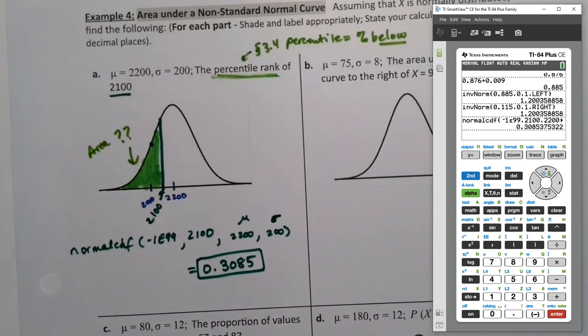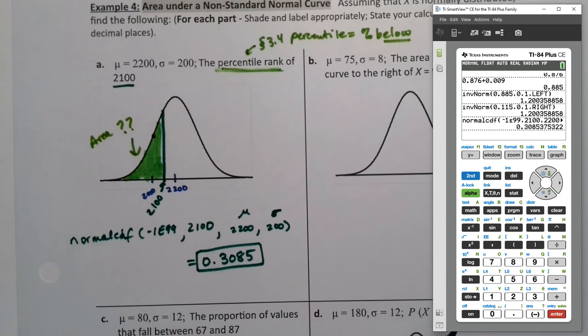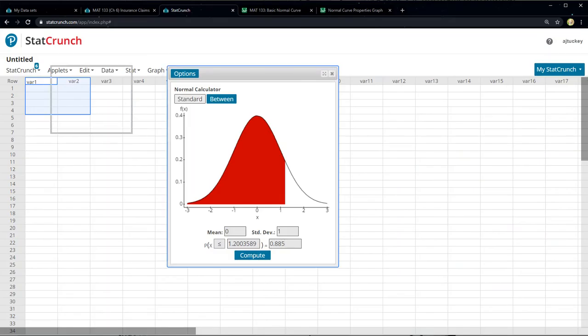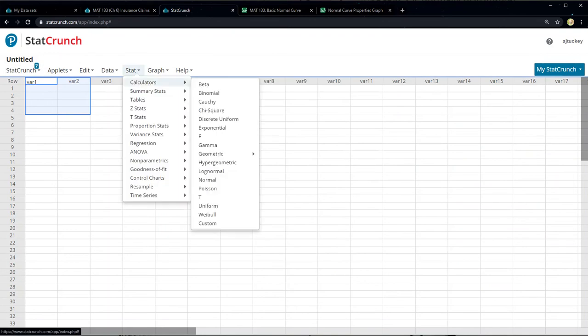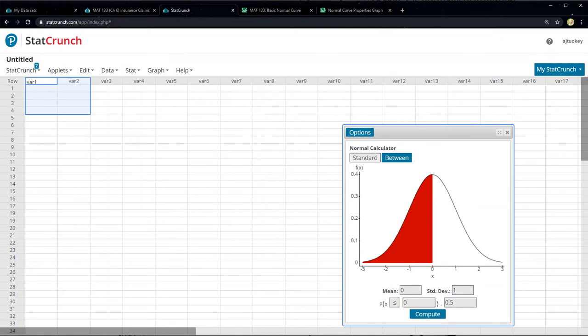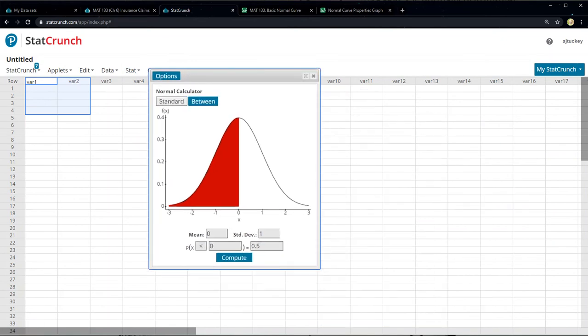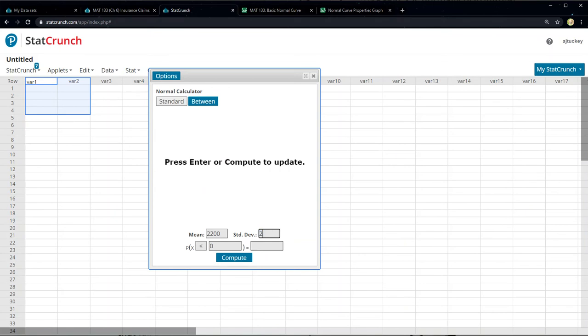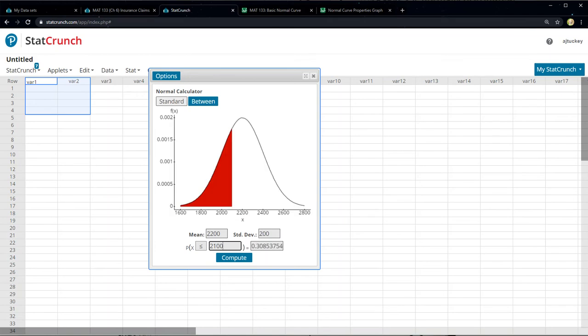And there you get it 0.3085, just like we saw, because this is the giraffe problem. So now you know where that number came from on StatCrunch. It's as simple as it always is. Remember that we're getting these values from stats, calculators, normal, right there. So I'll say mean is 2200, standard deviation is 200, and I want to be less than or equal to 2100, enter. And there you have it, 0.3085.